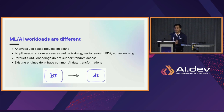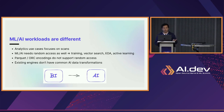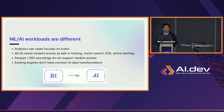Workloads are also very different. Analytical use cases really focus on scans — scanning a column to do filtering, then scanning other columns for projections, and returning a subset of your data. AI needs random access as well: for training, vector search, exploratory data analysis, active learning, and more. We're moving from the world of BI into AI, and Parquet and ORC, by design, do not really support good random access performance.